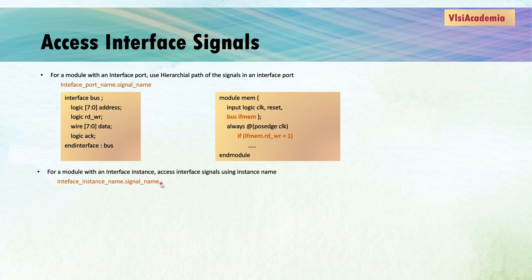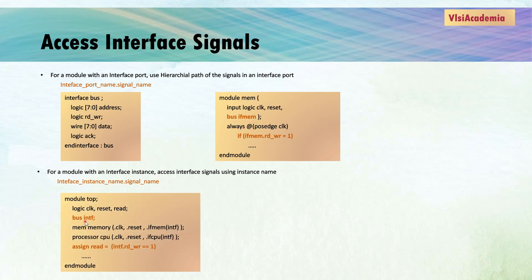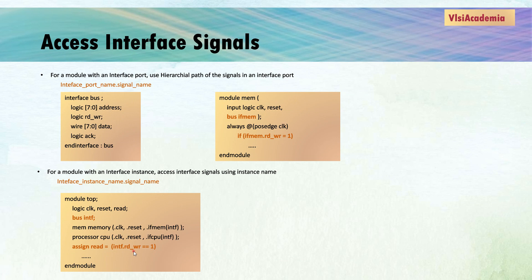The second approach of accessing an interface signal is to use the instance name. Here we are doing the instantiation of interface 'bus' and the instance variable name we are giving is 'intf'. If we want to access the read/write signal of the bus interface, we use the syntax: interface instance name dot signal name, so 'intf.read'. So you can access the interface signal using two ways: first, by defining the interface as a port type and using the port name; second, by instantiating the interface and using the instance name.